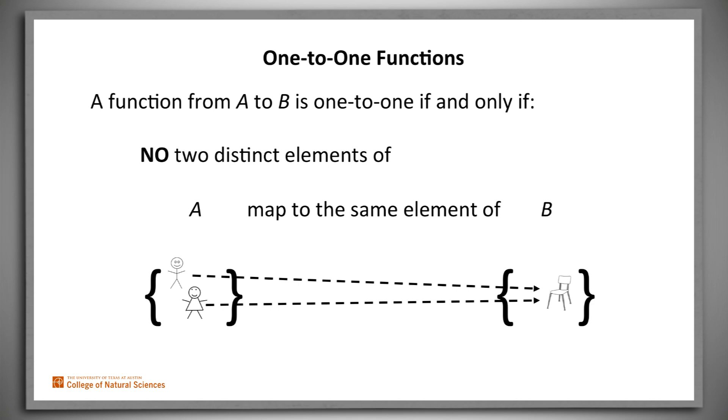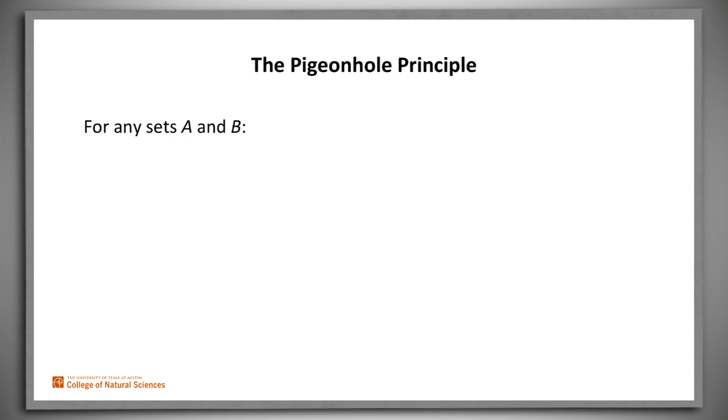So in this picture, the mapping from students to chairs isn't one-to-one. We can now state the pigeonhole principle formally, and we can do it in two different ways. First way, if the number of elements in A is greater than the number of elements in B, then there exists no one-to-one function from A to B.